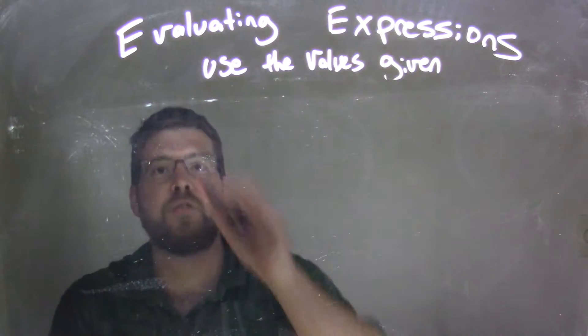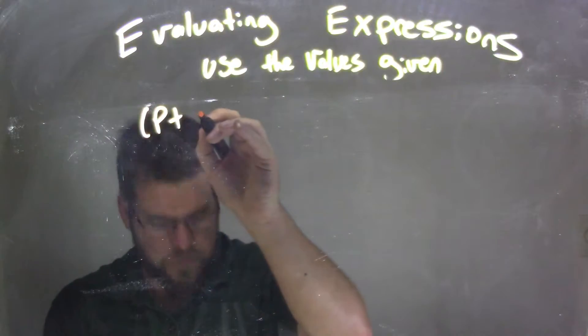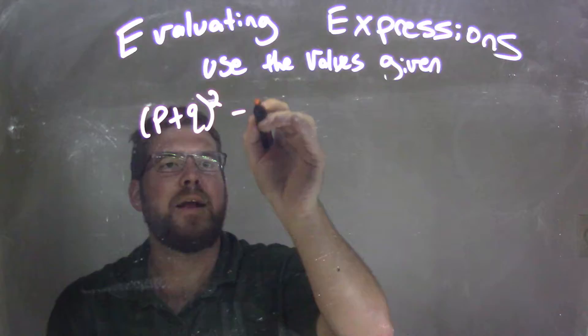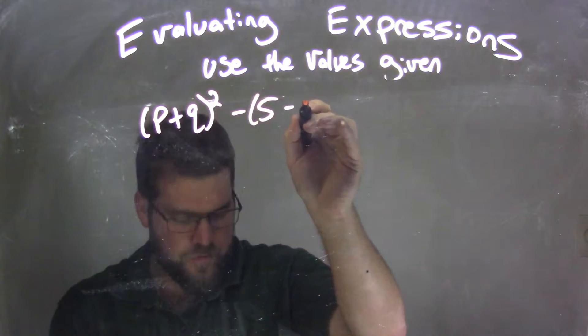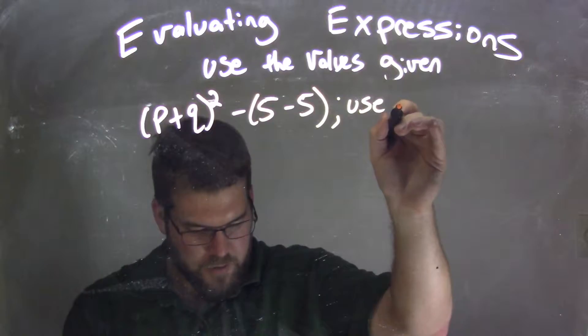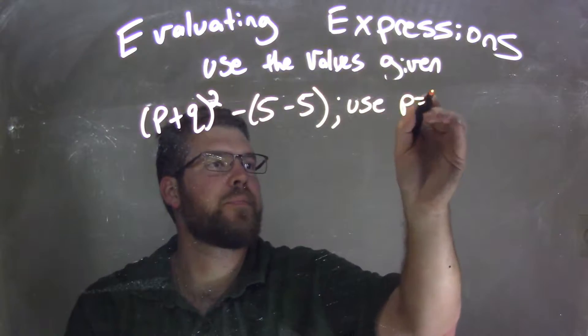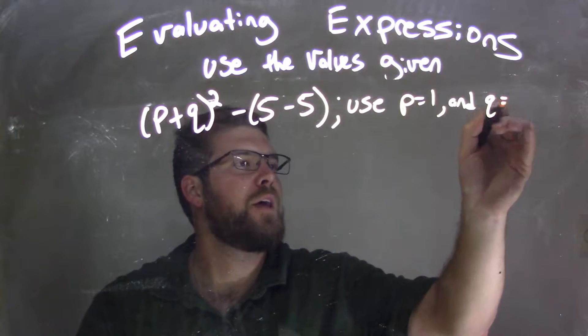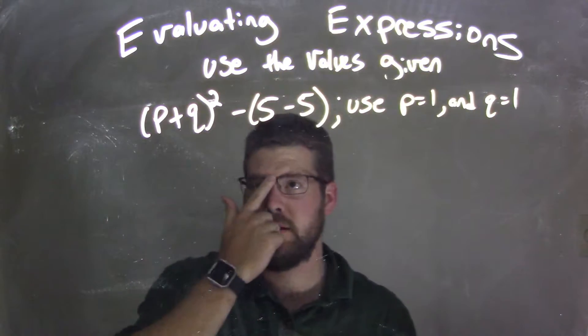So if I was given this expression: p plus q, all to the second power, minus 5 minus 5, and we're going to use the variables p being 1 and q equal 1 as well. A lot of ones here.